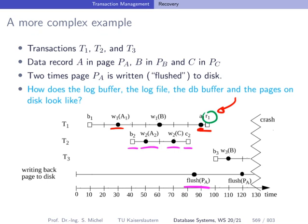We see transaction T3 performing a write operation on a data record stored in page pb, and then the crash happened. Obviously T3 is a clear case of a loser transaction.